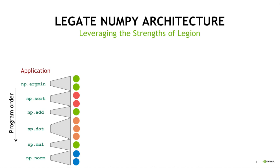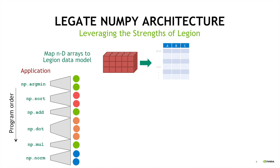Let's talk about how we deal with ND arrays. ND arrays map into Legion's data model. Legion has a data-frame-like data model with things called logical regions, which are effectively data frames — they have an index space of rows and field spaces of columns. Each ND array in NumPy will be a field in one of these logical regions. Importantly, Legion's logical regions do not incur memory allocations — they are abstract logical descriptions of data without necessarily describing how it's placed or laid out in memory. That's the job of the mapper.